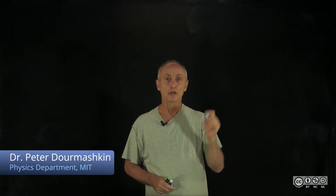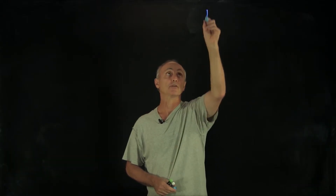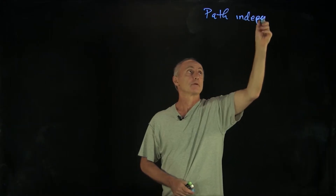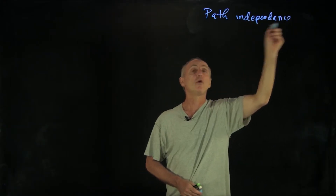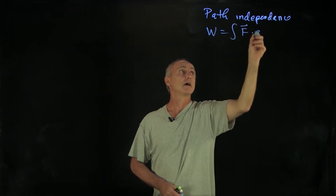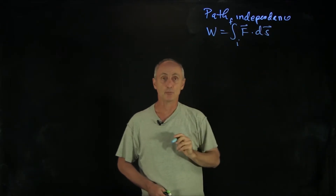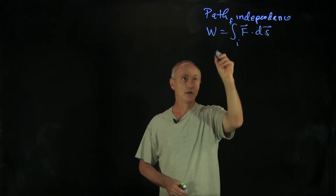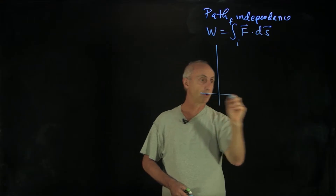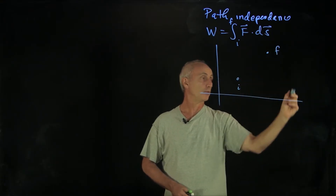We would now like to explore a property of work done by forces called path independence. Recall that our work is defined to be an integral of F dot ds from some initial to some final point. Let's look at an example. The force we're going to look at is the gravitational force. Let's draw a coordinate system and take an initial point and a final point.